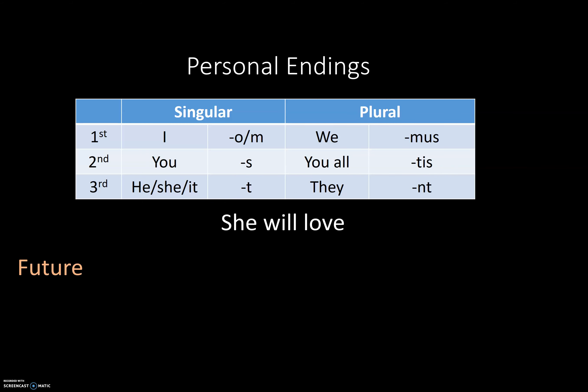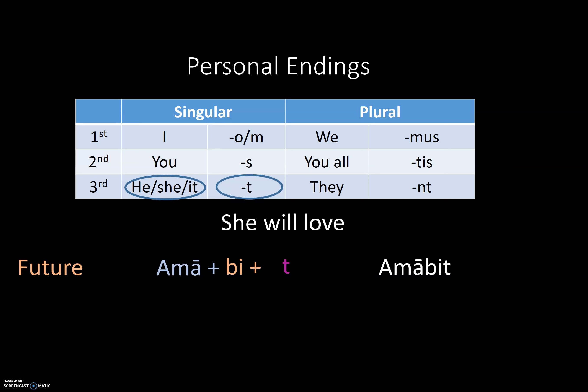For the future, 'will' tells us it is future tense. We take the present stem, add the signifier BI, then the ending. For he/she/it, the ending is T, giving us AMABIT. Note that first person singular would be AMABO, and third person plural would be AMABUNT with BU.